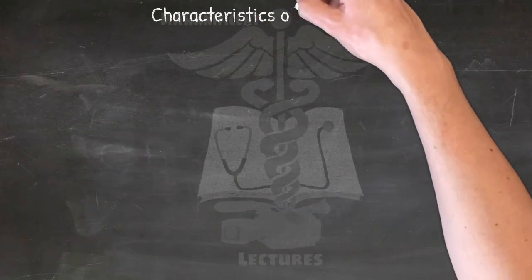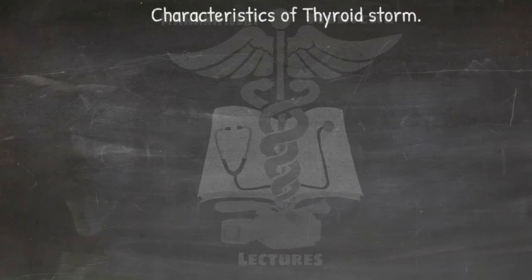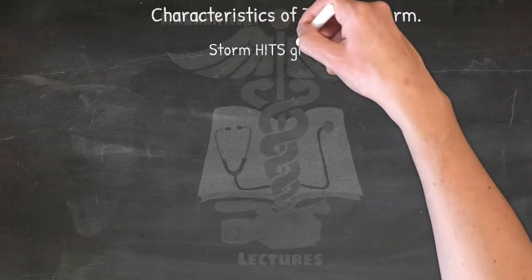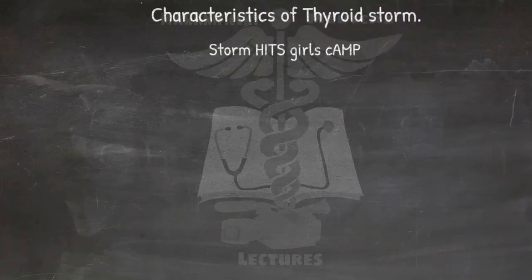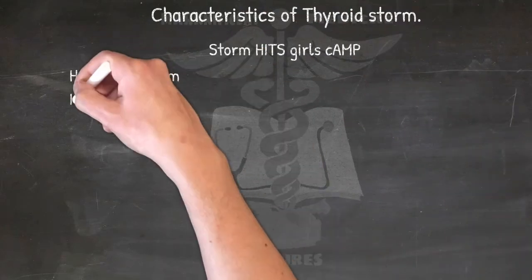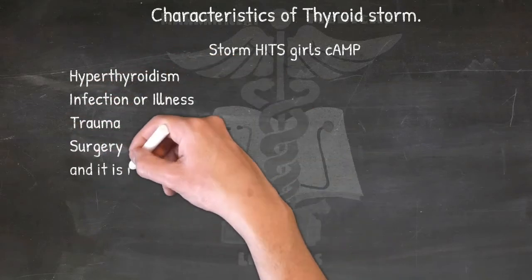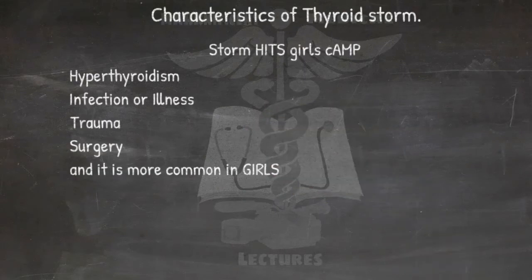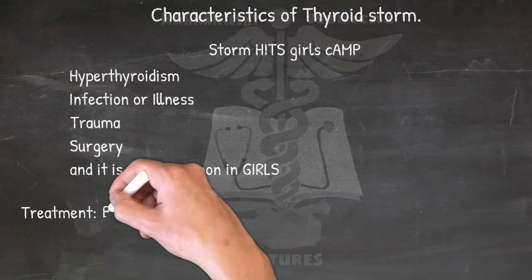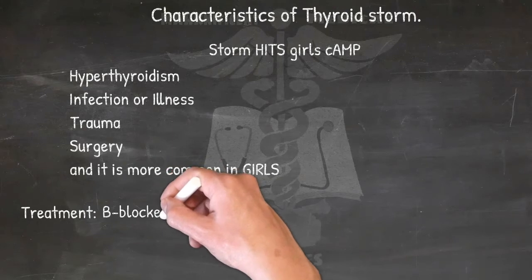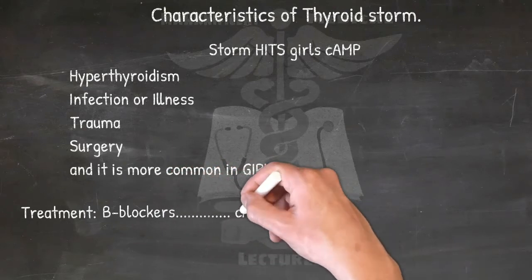Characteristics of thyroid storm: a rare but severe and potentially life-threatening complication of overactivity of the thyroid gland. Storm hits GIRLS CAMP — thyroid storm due to infection or illness, at Childbirth, Trauma, Surgery, and it is more common in girls. Treatment involves high dose of beta blockers, as beta receptors work via cAMP.